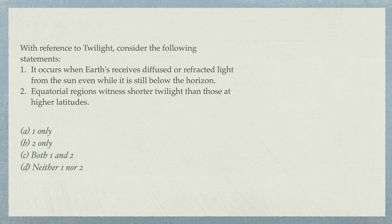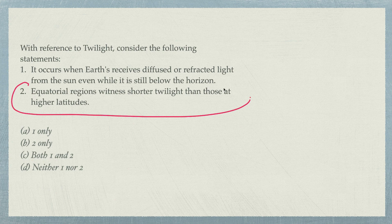Next, with reference to twilight, consider the following statements. Statement one: it occurs when the earth receives diffuse or refracted light from the sun even while it is still below the horizon. Statement two: equatorial regions witness shorter twilight than those of higher latitudes. If you have seen my lecture on the apparent movement of the sun, this should be clear.